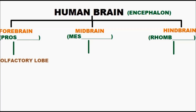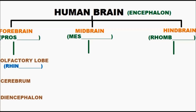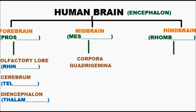The forebrain has three parts: olfactory, cerebrum, and diencephalon. The olfactory part is smell-related and is called rhinoencephalon. The cerebrum is the big part and is called telencephalon. The diencephalon is also called thalamencephalon, and the hypothalamus is part of the thalamencephalon.